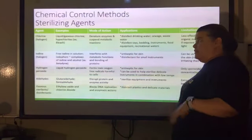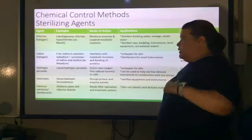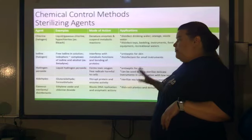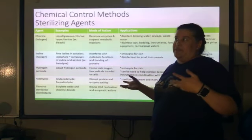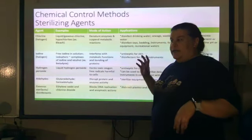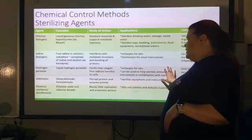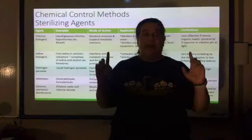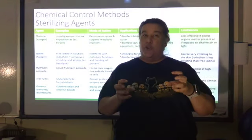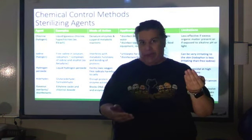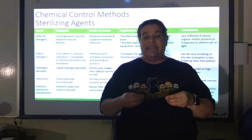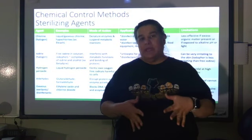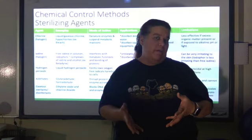Hydrogen peroxide — the brown bottle — forms toxic free radicals of oxygen that can be harmful to cells if they don't have a specific enzyme to get rid of it. It can be antiseptic for the skin and can help sterilize delicate instruments in combination with low temperatures. Hydrogen peroxide is not as corrosive as other things, so if you have very sensitive instruments used in surgery, you can soak them in hydrogen peroxide without damaging them, which is beneficial.